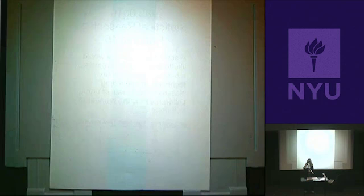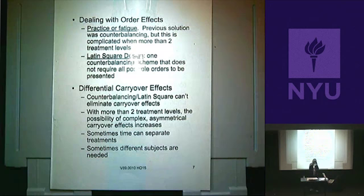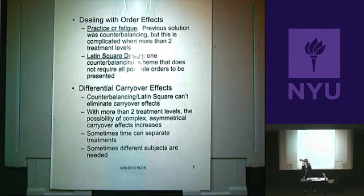Now, we're going to have some problems. What was the major problem we had in repeated measures when we did just two groups, like a before-after design? Order effects. You still have order effects — practice or fatigue effects. What did we do before to fix simple order effects? Counterbalancing. I show A then B; next person comes in, I show B then A.